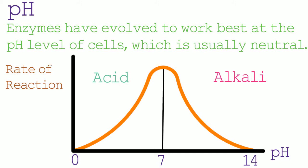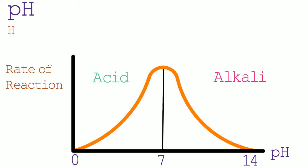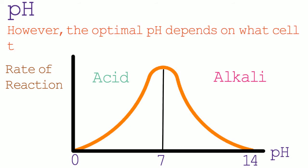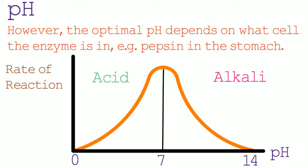For most enzymes the optimal pH is 7. However, the optimal pH depends on what cell the enzyme is operating in. For example, the stomach produces an enzyme called pepsin. The stomach also produces hydrochloric acid, which makes the contents of the stomach very acidic. The enzyme pepsin has evolved to work at an optimal pH of 2, which is the pH of the stomach. So usually enzymes work best at an optimal pH of 7, but sometimes this can differ depending on what enzyme we are looking at.